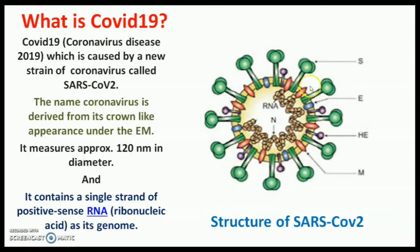The virus looks like this — it is an enveloped virus with many protein-like spikes on the membrane envelope. The main spike, which is the glycoprotein, is very important because this glycoprotein or spike actually lands on the host cell, that is the alveolar cell, and binds with the host cell receptor called ACE2, the angiotensin-converting enzyme 2.